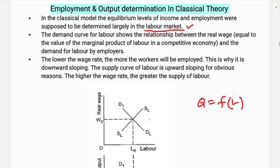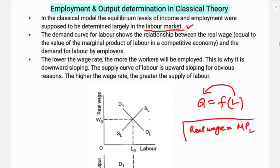The demand curve for labor shows the relationship between the real wage, which is equal to the value of the marginal product of labor in a competitive economy. The real wage — that is, wage in terms of goods — will be equal to the marginal product of labor, meaning the contribution of labor to production. Workers are paid a wage equal to their marginal product.